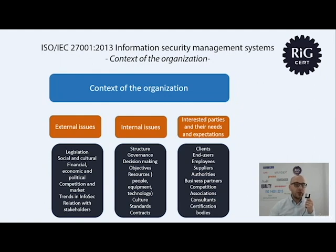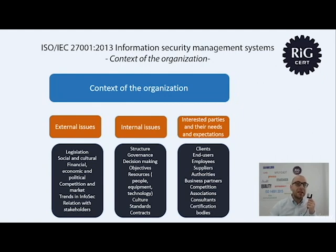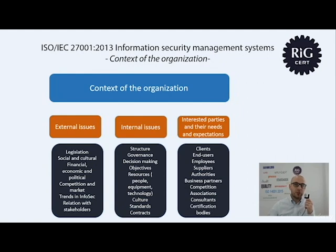External issues are elements from outside the organization. These include legislation, social and cultural aspects, financial, economical or political aspects, competition and market elements, trends in information security on the market, and relations with stakeholders. Internal issues are things from inside the organization, such as structure, governance, decision-making processes, and objectives.